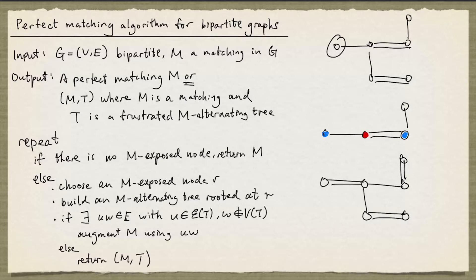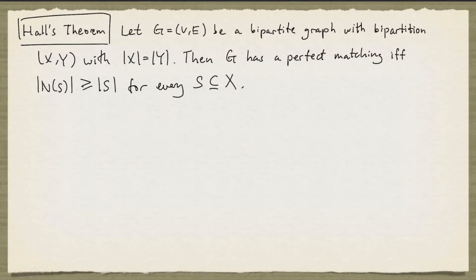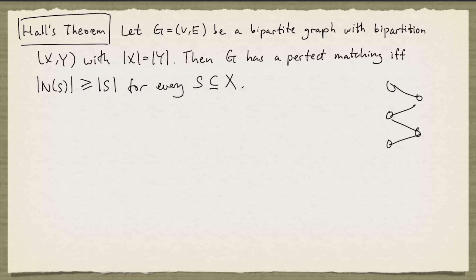This algorithm can be used to prove a classical result called Hall's theorem. The theorem states the following. Let G be a bipartite graph with bipartition X, Y, with the cardinality of X equal to the cardinality of Y. Then G has a perfect matching if and only if the cardinality of the neighbor set of S is at least the cardinality of S for every subset S of X. The neighbor set of S denotes the set of nodes not in S joined by an edge to some node in S.